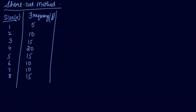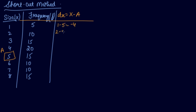Now let's understand the shortcut method. The x series and its frequencies are given. In the shortcut method, you take the deviation of x from an assumed mean. Let's take 5 as the assumed mean. The deviations dx are: 1−5=−4, 2−5=−3, 3−5=−2, 4−5=−1, then 0, 1, 2, and 3.